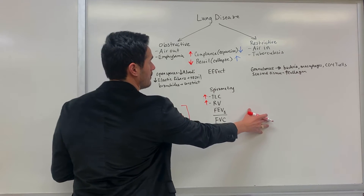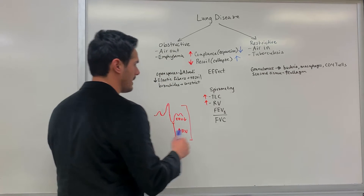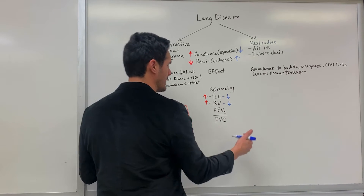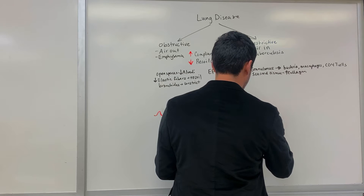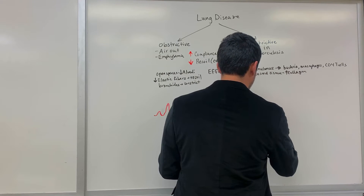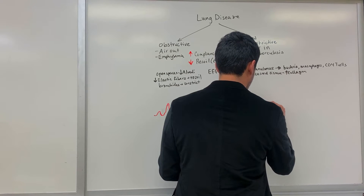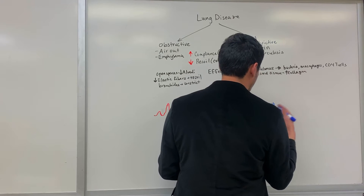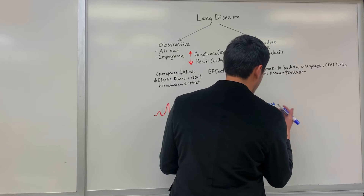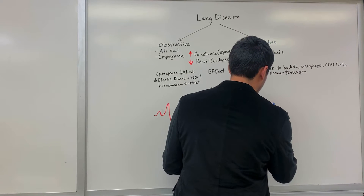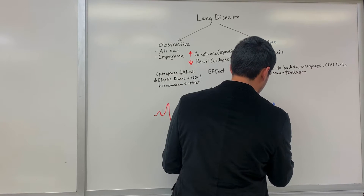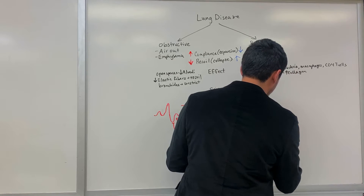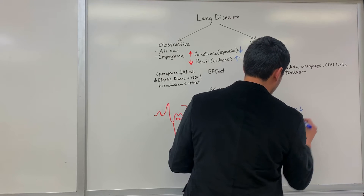For tuberculosis as a restrictive lung disease, it's going to be the opposite. The total lung capacity is going to be reduced, and the residual volume is going to be reduced. On a spirometer, you'd have a tidal volume, but because they can't get air in, the IRV is going to be very small — reduced. The ERV is also going to be reduced, because if you can't get in a lot of air, there's not going to be a lot of air that you can blow out. So both ERV and vital capacity are reduced, residual volume is reduced, and as a result the total lung capacity is going to decrease.